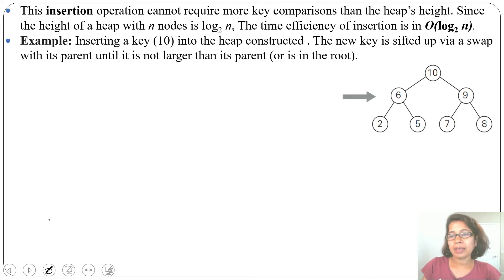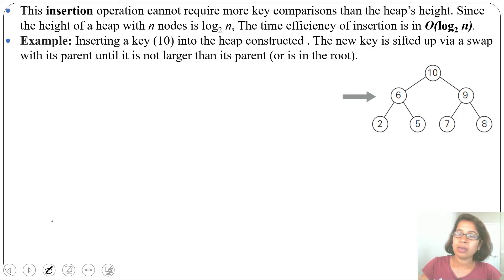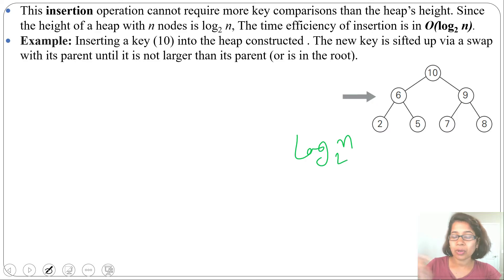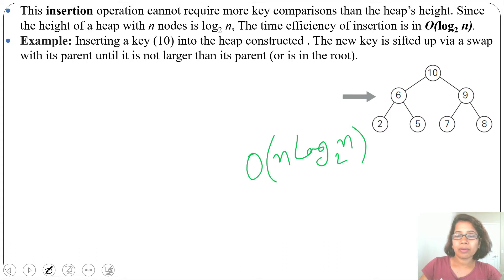In top-down heap construction, every time we insert a new node we compare it with its parent and shift it up if its value is greater than the parent. For one node insertion, running time is O(log₂ n). For top-down heap construction inserting n nodes, running time will be O(n log₂ n).